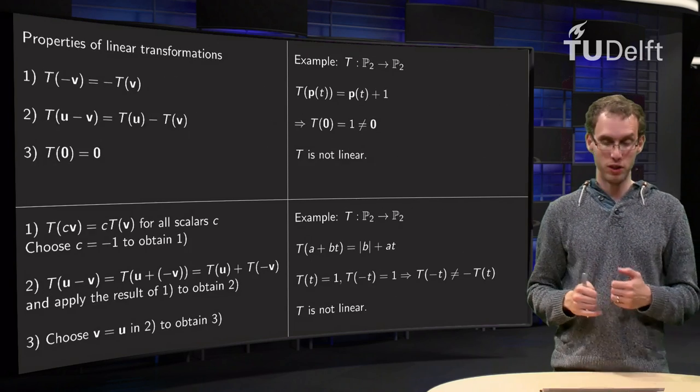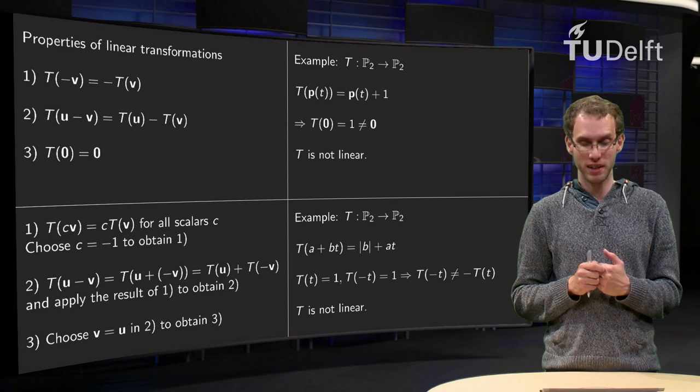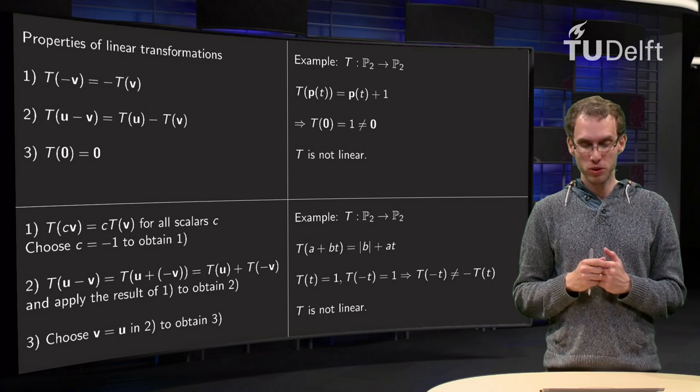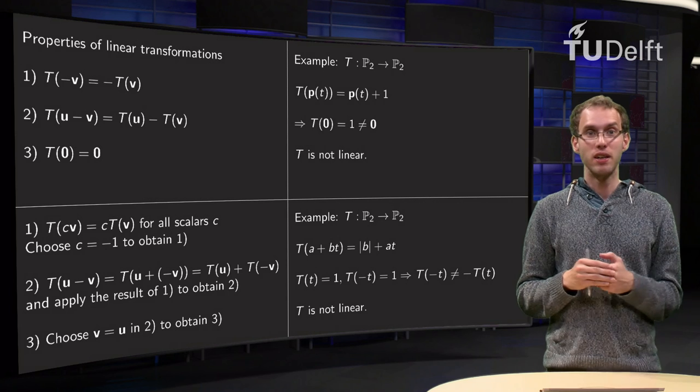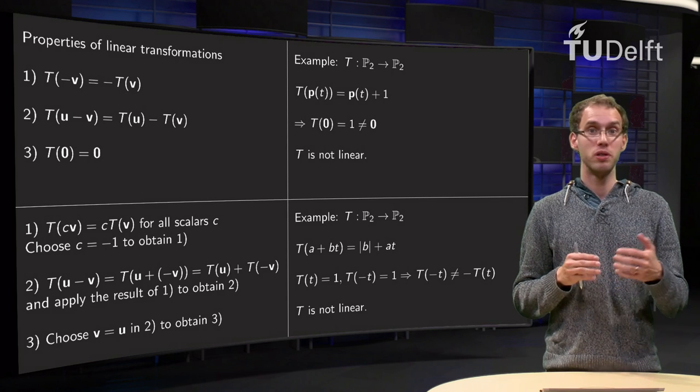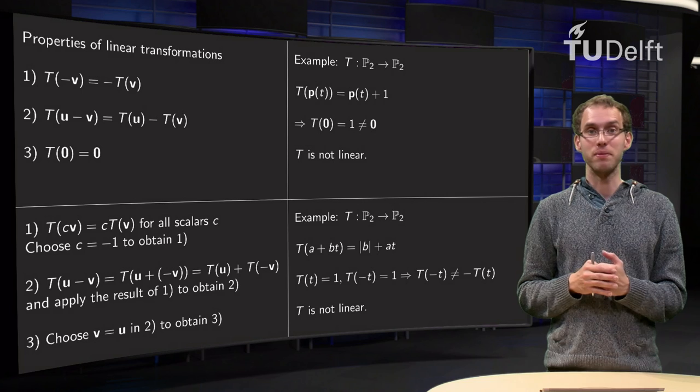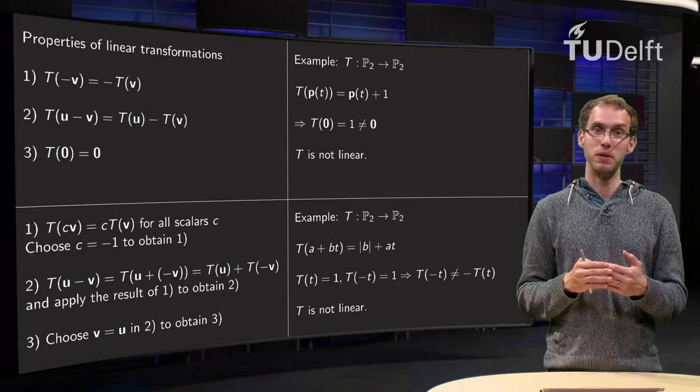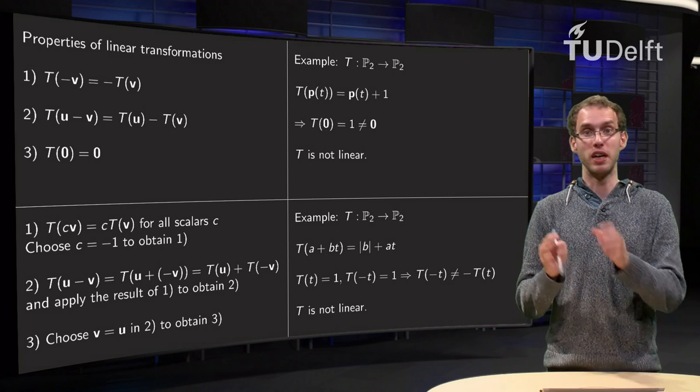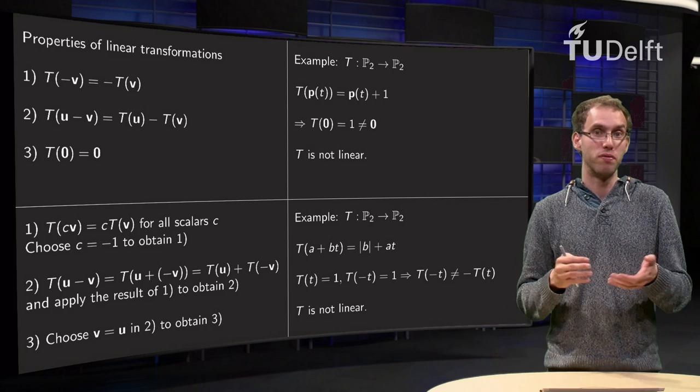Second example, which also appears to be very linear. Again from P2 to P2. Take an arbitrary polynomial in P2, say a plus b t. Then we define the image of a plus b t as absolute value of b plus a times t. Again looks very easy.